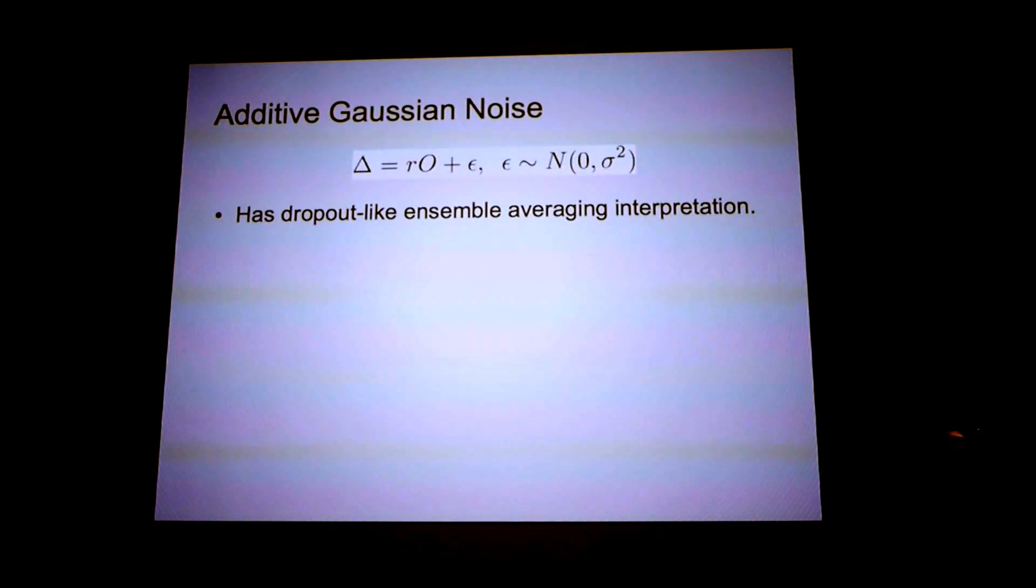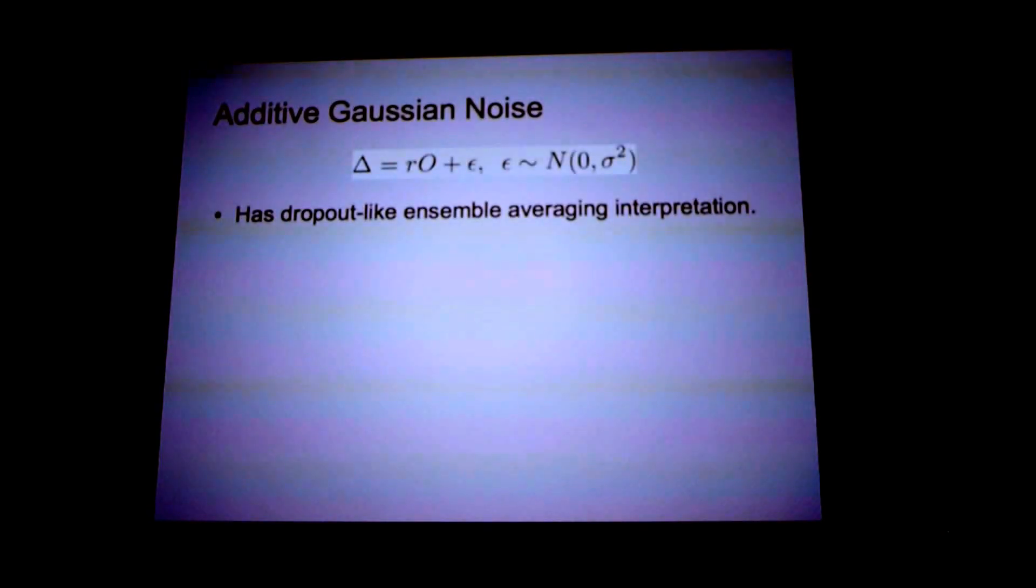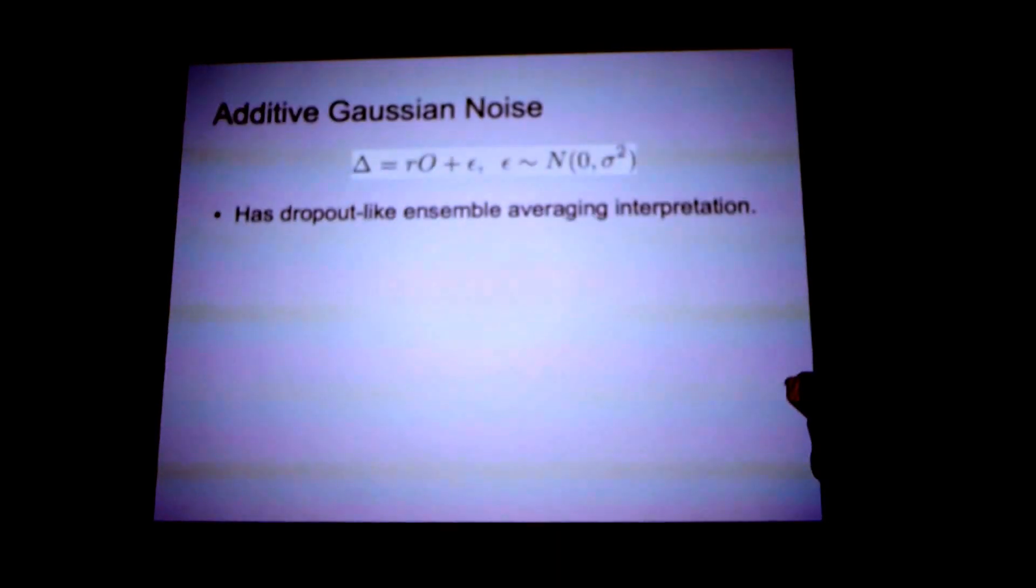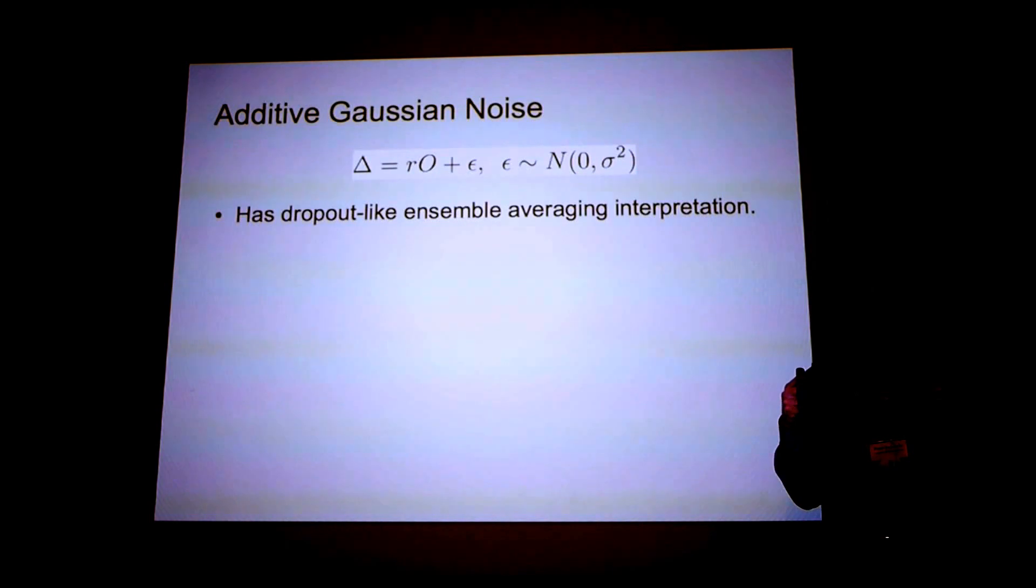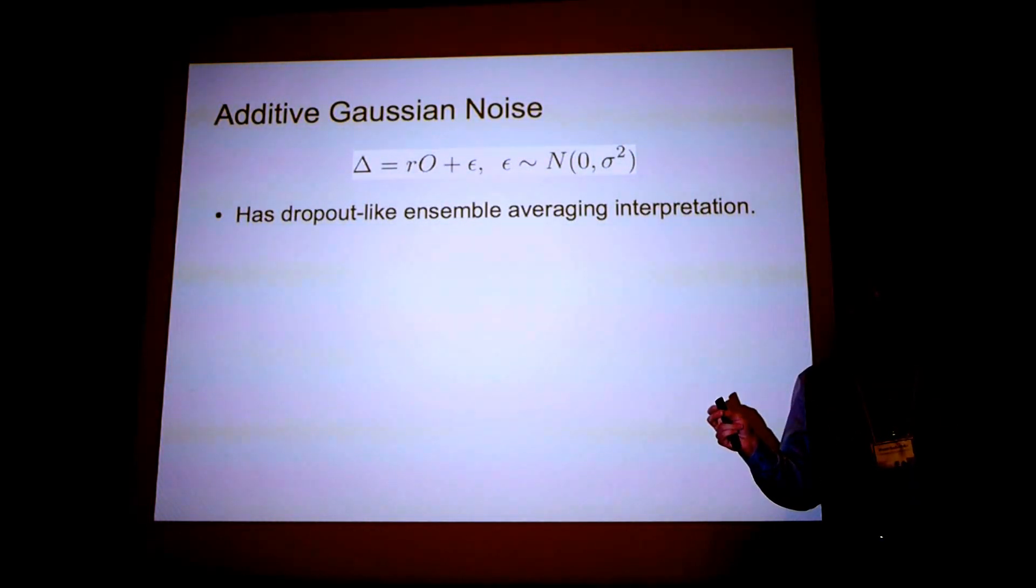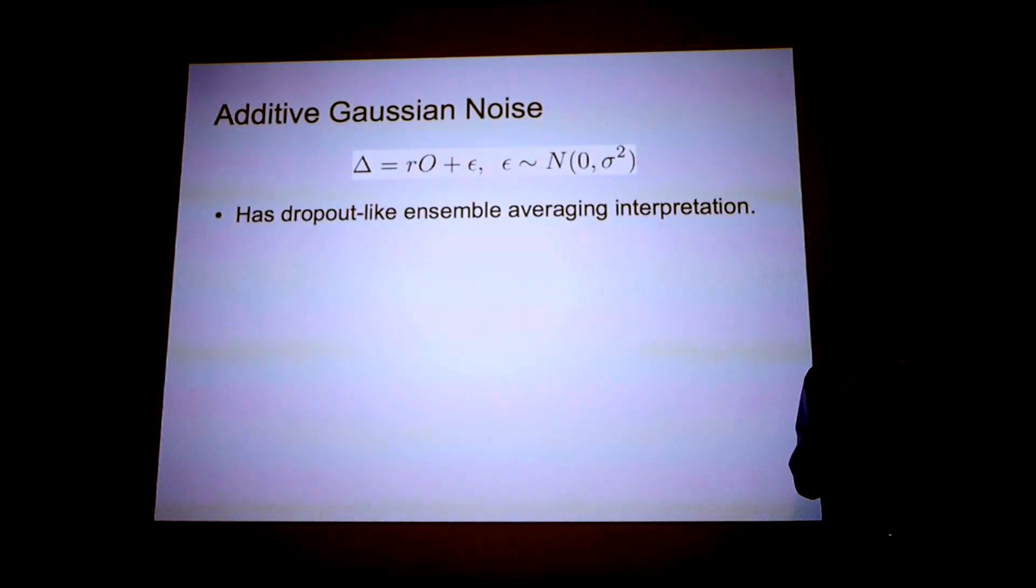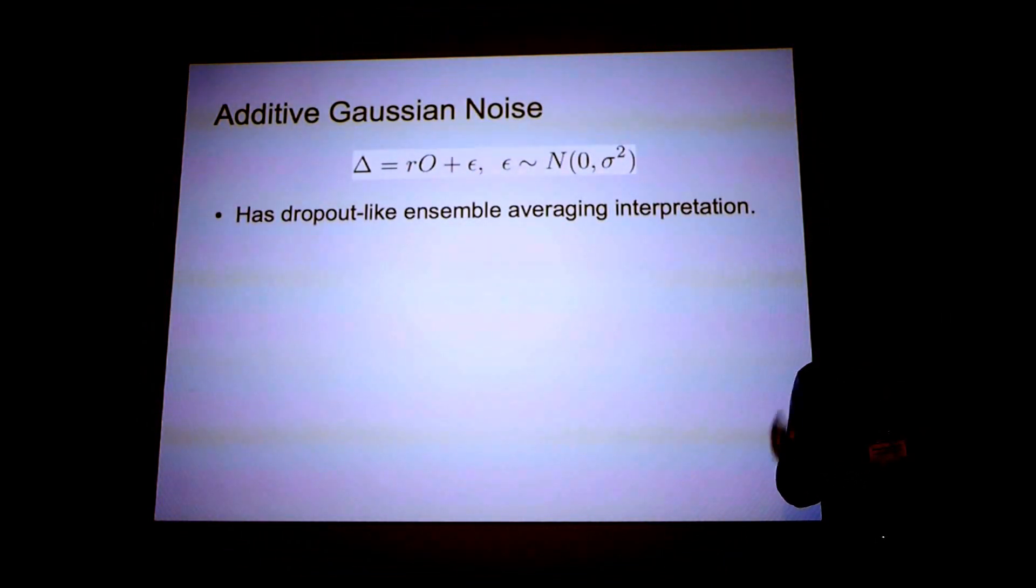So I'd like to point out that this is very similar to dropout. There was these two motivations for dropout. One was that we decreased the neuron dependencies in each layer. Additive Gaussian noise will definitely do that. And the other interpretation motivation for dropout is that we are performing some kind of massive ensemble averaging. Now additive Gaussian noise actually has that interpretation also. In dropout, your ensemble average is over all possible dropout sub-networks. But with additive Gaussian noise, you're performing this ensemble average over networks with different noise terms added to each neuron.